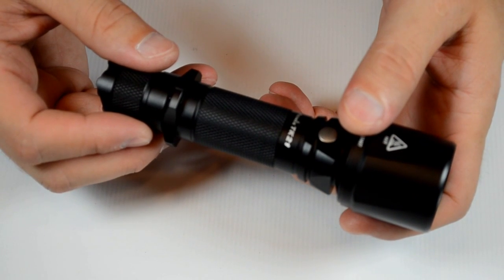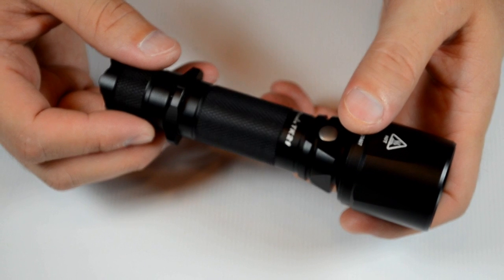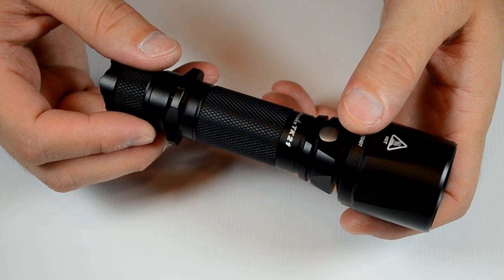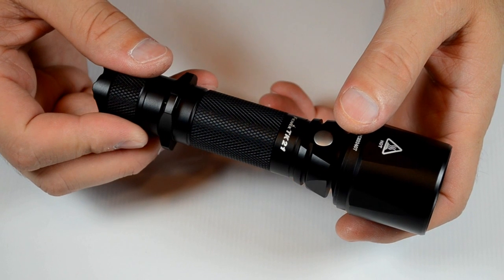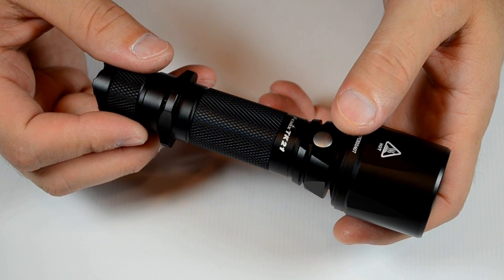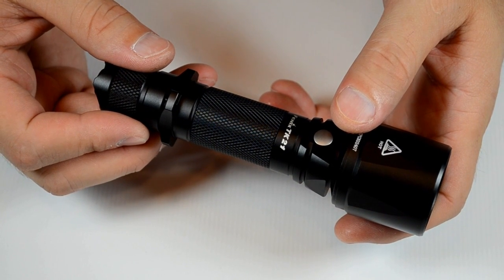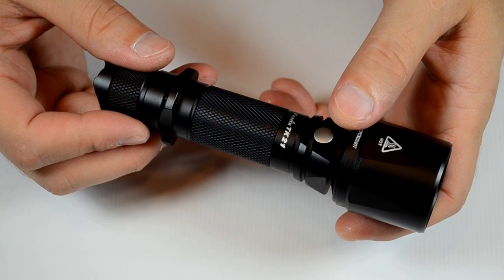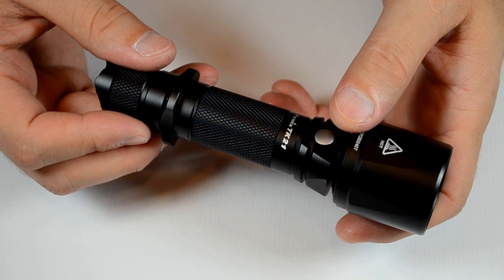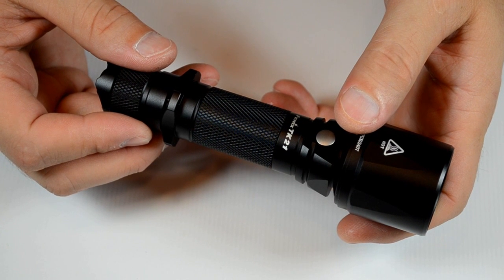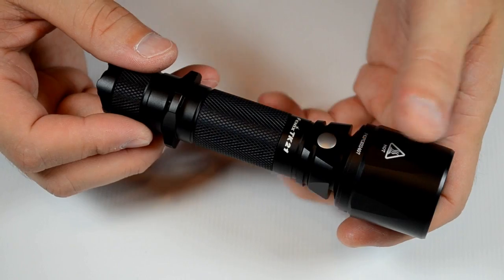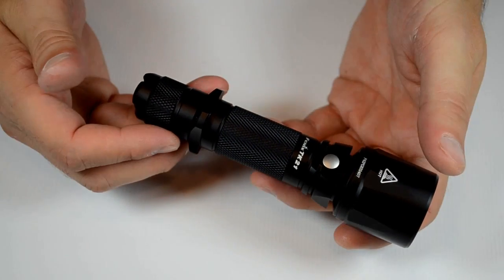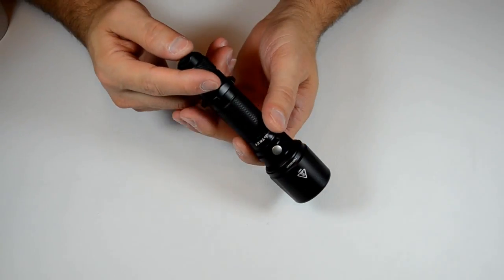It does 468 lumens for its highest output for an hour and 50 minutes. Its low is 5 lumens for 220 hours, its mid is 58 lumens for 16 hours, and its high is 180 lumens for 5 hours 10 minutes. The first one I told you, 468 lumens, that's its turbo at an hour and 50 minutes. So let's see a little bit about what this light can do.